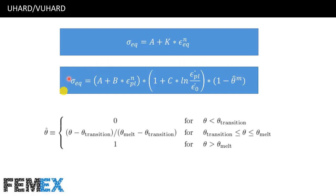For example, the famous Johnson-Cook plasticity model has this equation format, and you can use UHARD or VUHARD subroutines to define it. There is no need to use UMAT or VUMAT for this model, because that would take a lot of time.